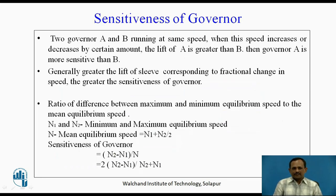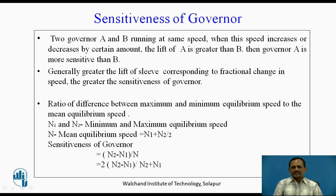Sensitiveness of governor: if we consider two governors A and B running at the same speed, and when this speed increases or decreases by a certain amount the lift of A is greater than B, then governor A is more sensitive than B. Generally, greater the lift of the sleeve corresponding to a fractional change in speed, the greater the sensitiveness of the governor. In other words, sensitiveness is defined as the ratio of the difference between maximum and minimum equilibrium speed to the mean equilibrium speed.